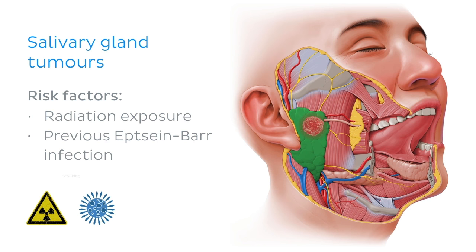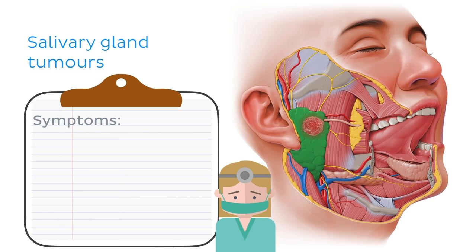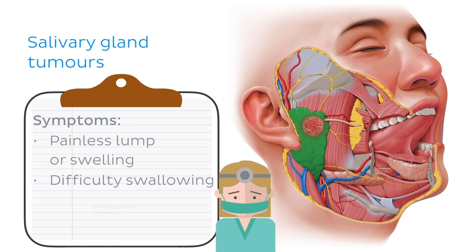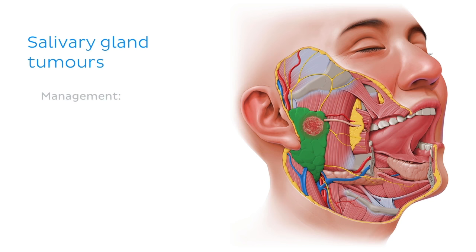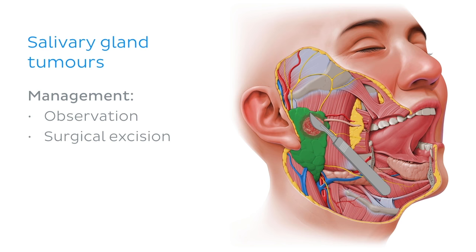Patients usually present with a painless lump or swelling in the region of the parotid gland. As the tumour grows, other symptoms may occur, such as difficulty swallowing or opening the mouth. Any suspicious lesions undergo ultrasound scan with fine needle aspiration cytology to determine management. Management of benign tumours usually involves observation in older patients and surgical excision in younger patients, due to the risk of tumours becoming malignant. Radiotherapy can also be used in the treatment of parotid tumours.